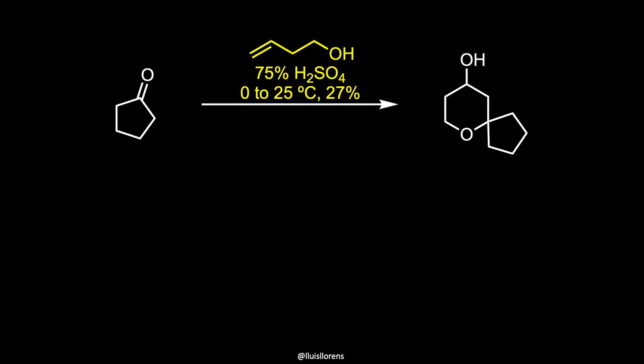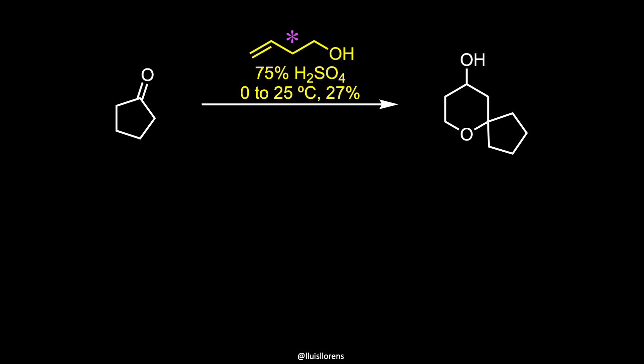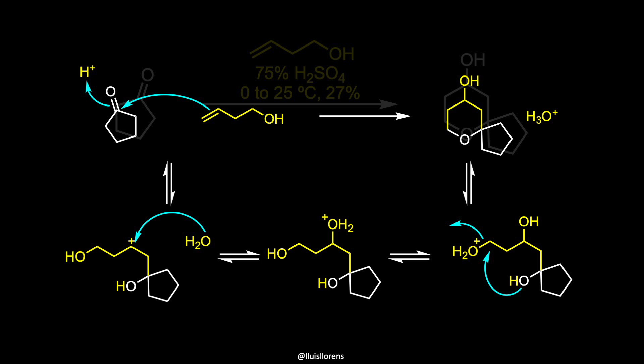The forward synthesis begins with a Prins reaction between pentanone and butanol in 75% sulfuric acid. The Prins reaction is the acid-catalyzed condensation of alkenes with aldehydes or ketones, and involves the electrophilic addition of a ketone to an alkene, followed by the capture of water.